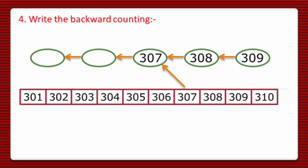Now 306 comes before 307, so we will write down 306 as the answer. And as 305 comes before 306, so we will write down 305. So we have completed the backward counting.